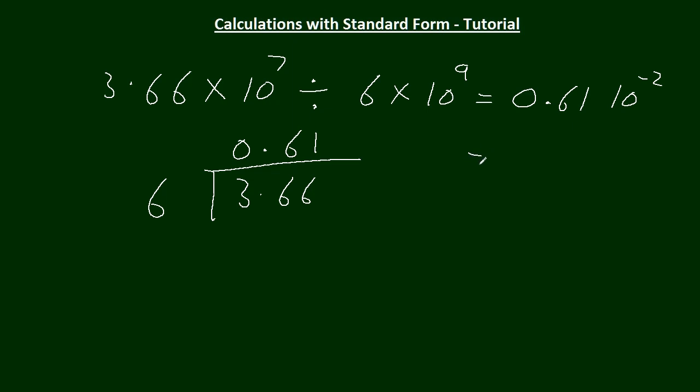But it's not standard form. So we can show it as standard form as 6.1 over 10 times 10 to the minus 2. I must put the times in there. And that's going to be, we have to take another 1 off of here, 6.1 times 10 to the minus 3. So that's division.